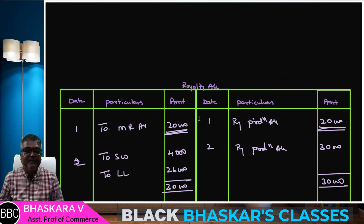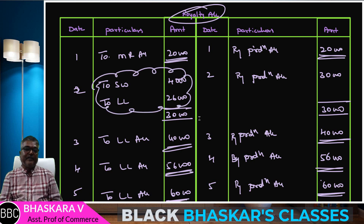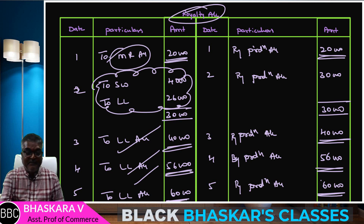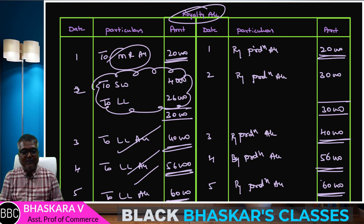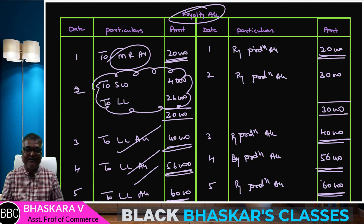Royalty account students — short working, two landlord, minimum rent. Like, comment, friends, share. Next session: important problems with adjustment, two sessions. Question paper next session: lockout, strike adjustments. Bye bye, students.